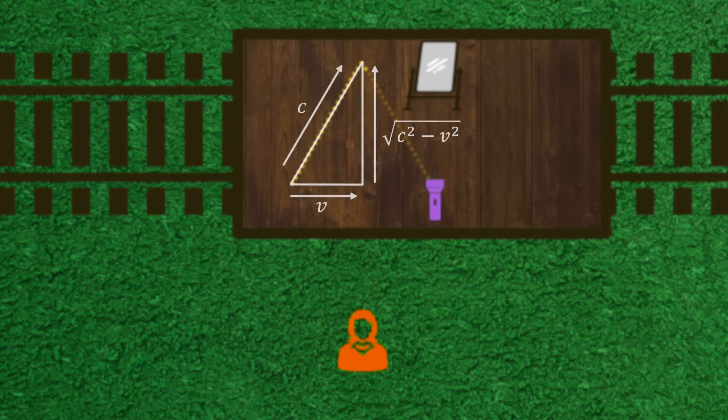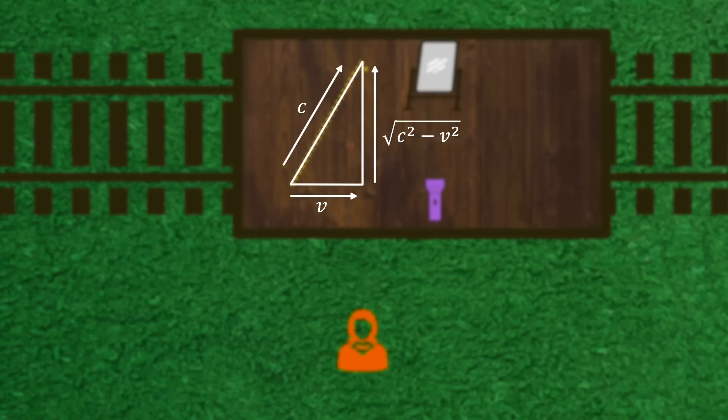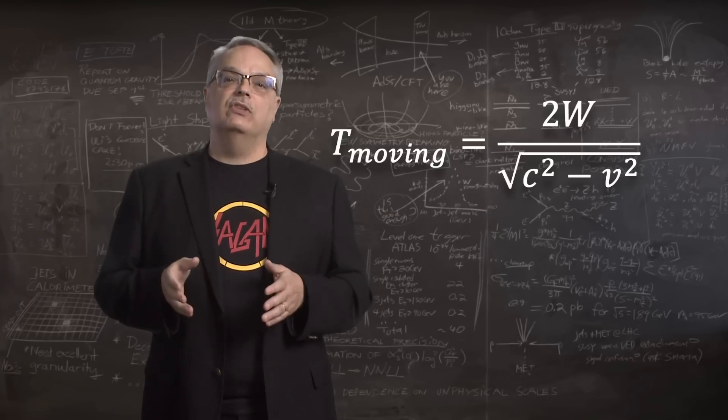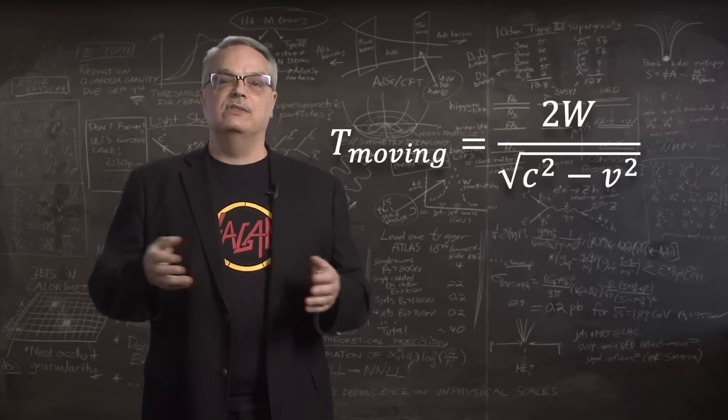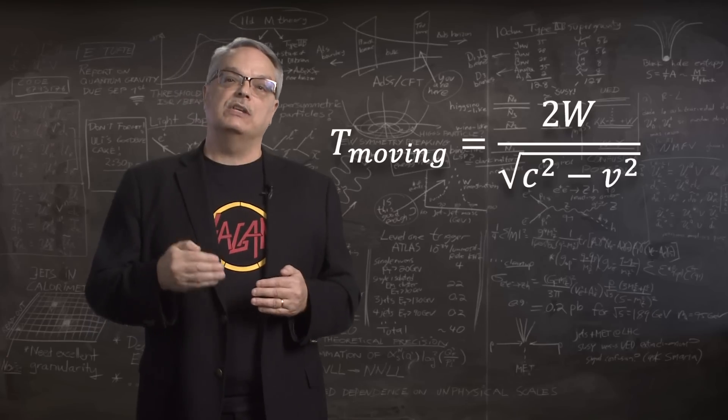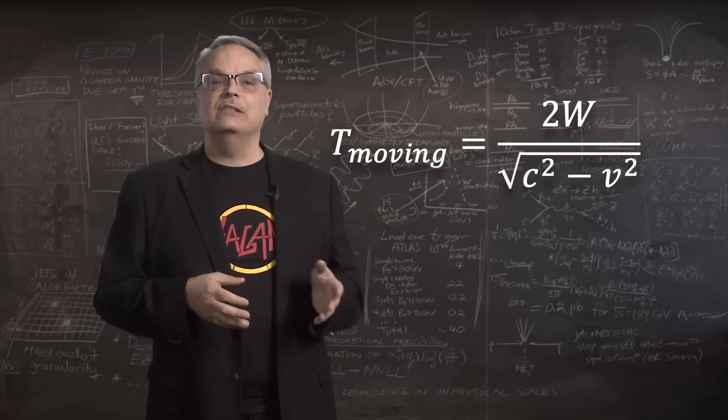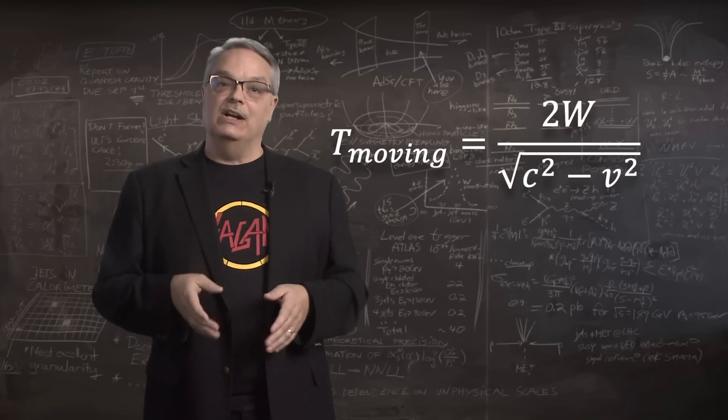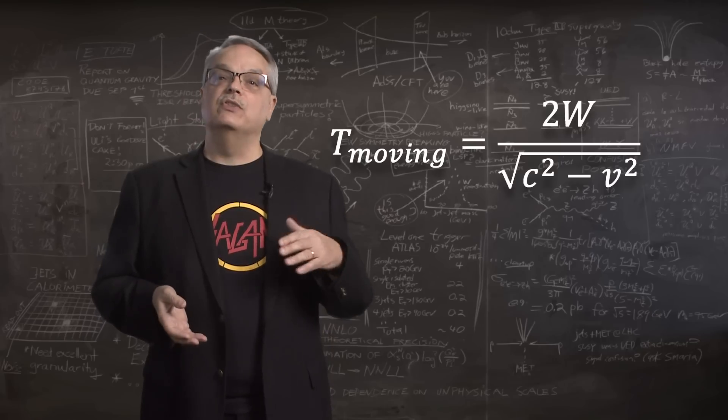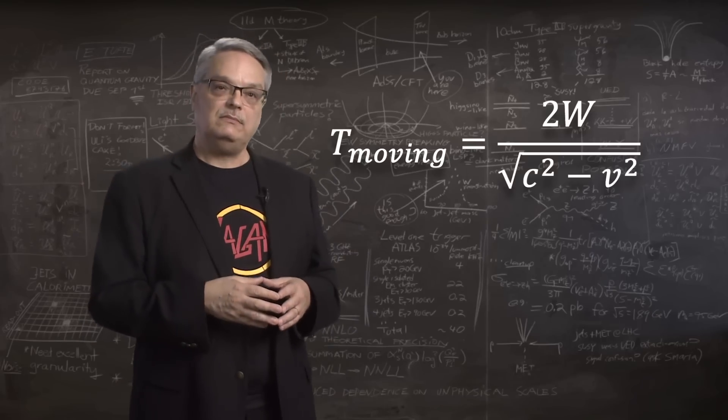Remember that the outside observer also says that light is traveling at the speed of light along the path that they see, which is the hypotenuse of the triangle. So if light is moving along the hypotenuse at c and along the motion of the train at v, then it's moving towards the mirror at the speed of the square root of c squared minus v squared. And if the velocity of light moving across the train and back is that, then the time it takes for light to cross the train and back according to the person seeing the train move is 2 times w divided by that speed, which is the square root of c squared minus v squared.